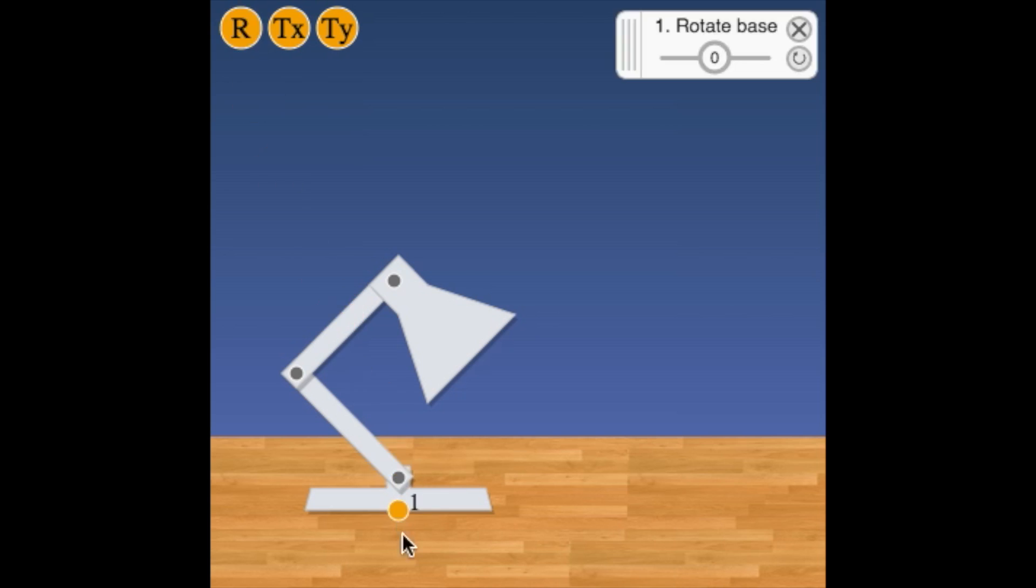So we need to add controls to the lamp so it can move to a new location. We can do this by adding rotation and translation deformers to the base of the lamp.